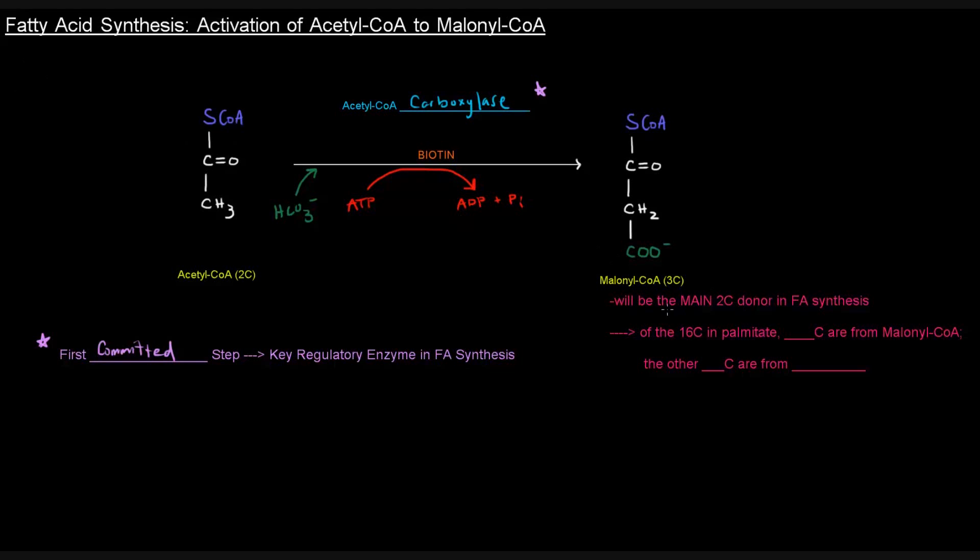The reason I say the main 2-carbon donor is because it's going to contribute almost all the carbons to the palmitate that we're making. Of the 16 carbons in palmitate, 14 of those carbons are from malonyl-CoA. The other 2 carbons are from acetyl-CoA.